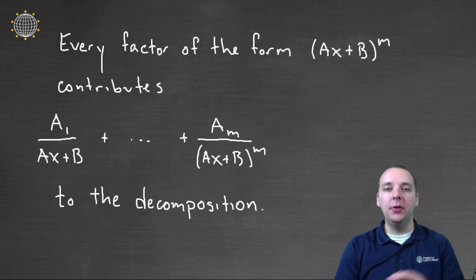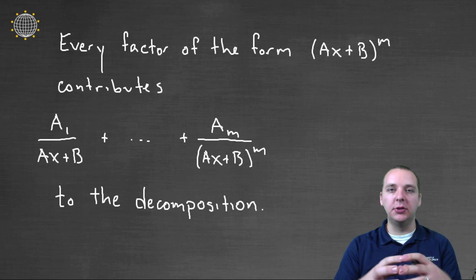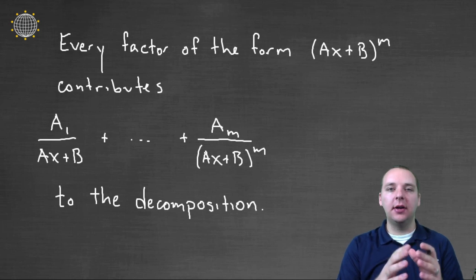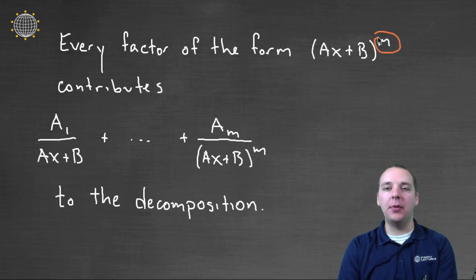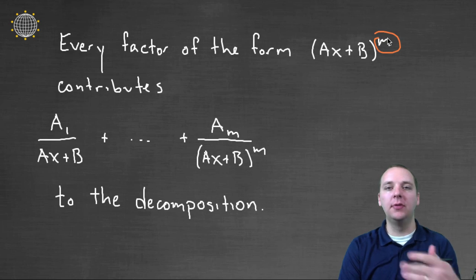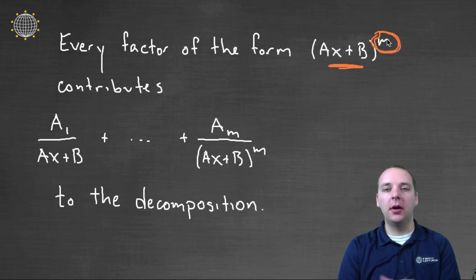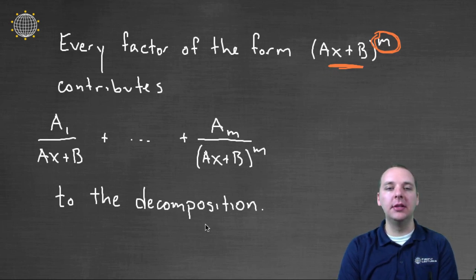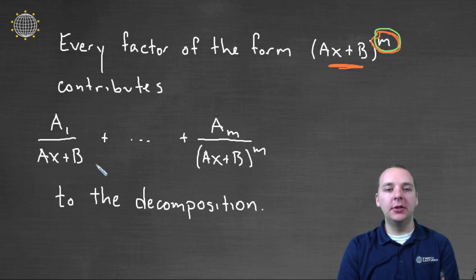So if your denominator in the rational expression you're trying to decompose into bite-sized pieces has any factors of the form AX plus B — that's linear — AX plus B to any power, squared, cubed, to the fourth, to the fifth, whatever — if the factor itself is linear, it doesn't really matter about the power. That factor is going to contribute a number of terms to the decomposition. How many terms? Well, that depends on the power — it contributes M terms in the decomposition.